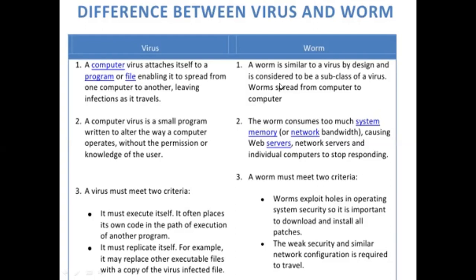When it comes to the worm, a worm is also similar to the virus by design and is considered a subclass of the virus. The virus will affect more locations and more space, whereas the worm will affect within a smaller process. But the worm also spreads from one computer to another through removable devices. A computer virus is a small program written to alter the way a computer operates without the permission or accessibility of the particular user — remotely, that particular operating system or device will be used by those special viruses.